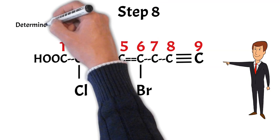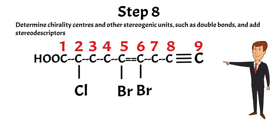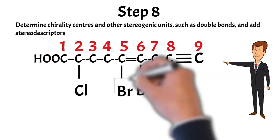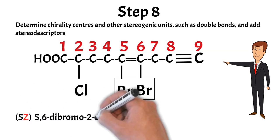Step number 8: determine chirality centers and other stereogenic units such as double bond geometry, and add these stereo descriptors before the secondary prefix part of the name. Stereo descriptors mean: specify the geometry of the double bonds using the classical cis-trans system or modern E-Z system, and for chiral centers use the R-S system. Also include locants of the double bonds and chiral center as prefix to the letters Z, E, R, and S, etc. In this compound we have a double bond at position 5 and both bromines are on the same side, so you can write cis or the modern Z. Write the descriptor as '(5Z)' enclosed in parenthesis before the name of the compound.